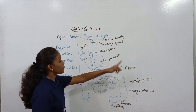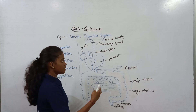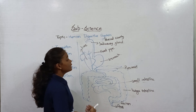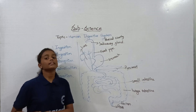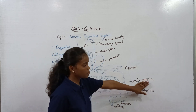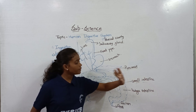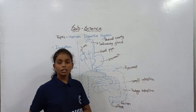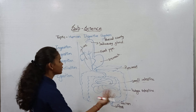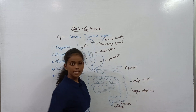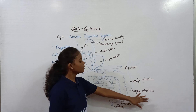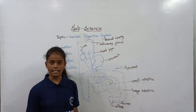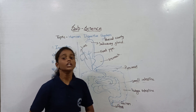The salivary gland, liver, and pancreas are types of glands. The liver and pancreas release digestive juices. This food mixes with digestive juices and reaches the small intestine, where it absorbs some nutrients from the food. Then this food is transferred to the large intestine, which also absorbs water from the undigested food and transfers it to the rectum.